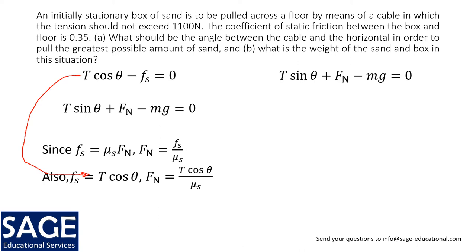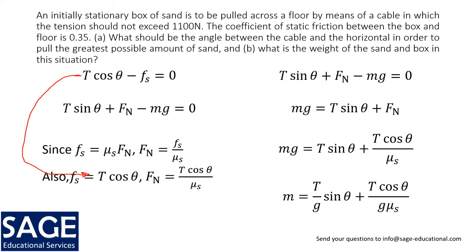And then T sine theta here, I can substitute fn into that equation. So mg rearranging gives me T sine theta plus fn, and then mg is equal to T sine theta plus T cosine theta over mu s. And I can divide throughout by g, which gives me this expression for the mass of the box.